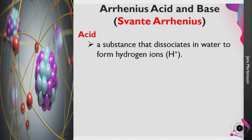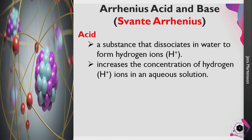According to Arrhenius, an acid is a substance that dissociates in water to form hydrogen ions. When we say dissociates, it means to disintegrate, to break — the substance separates in the presence of water and forms hydrogen ions. That is why an acid, according to Arrhenius, also increases the concentration of hydrogen ions in an aqueous solution, because an acid which dissociates in water forms hydrogen ions.